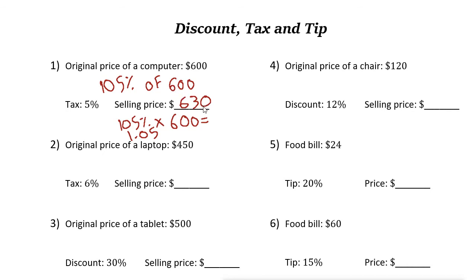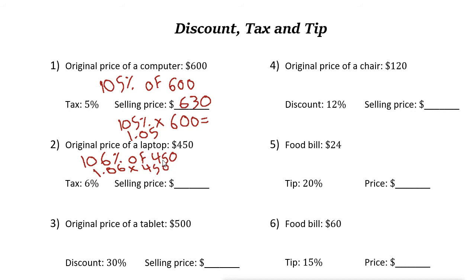Let's look at the next example. The original price of a laptop is four hundred fifty dollars and the tax is six percent, which means you need to find one hundred six percent of four fifty. On your calculator, instead of one hundred six, write one point zero six, then times four fifty.